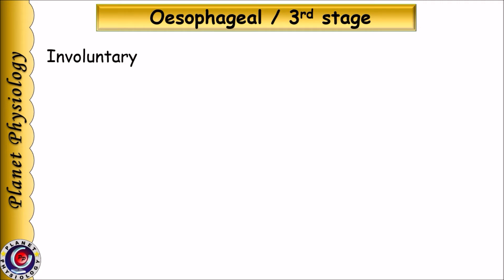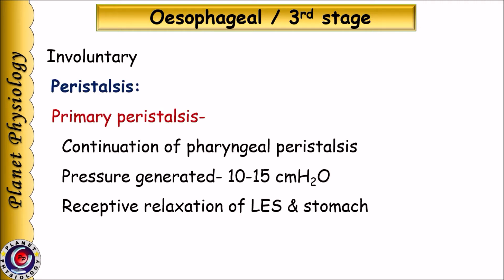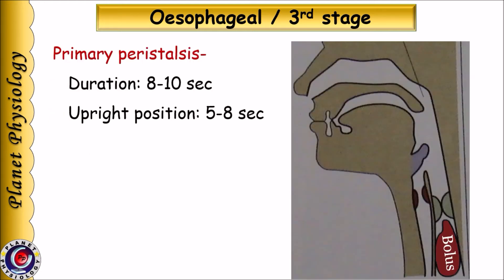The esophageal stage is also involuntary in nature and is a continuation of pharyngeal peristalsis in the esophagus — called primary peristaltic movement. It generates pressure of 10–15 cm of water in the esophagus, sufficient to move the bolus to the stomach. As the peristaltic wave proceeds, it causes receptive relaxation of the distal segment. As it approaches the end of the esophagus, it leads to receptive relaxation of the lower esophageal sphincter, facilitating entry of bolus into the stomach. Bolus takes about 8–10 seconds to reach the stomach; in the upright position, gravity facilitates this, and bolus enters in 5–8 seconds.